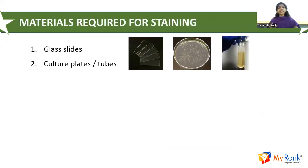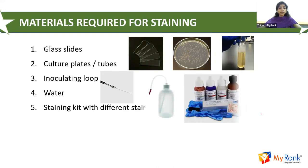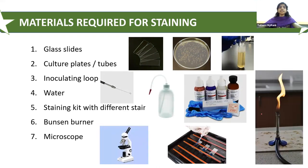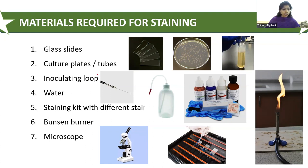Now let's talk about the materials required for staining. The common materials required for carrying out any staining method are: firstly, glass slides, which must be clean and grease-free; culture plates or tubes that contain the growing organism; an inoculation loop or inoculation needle; and water, using a wash bottle for washing the specimens or stains. We also need a staining kit with different kinds of stains — it includes a dropper, cover slip, glass slides, and various stains.